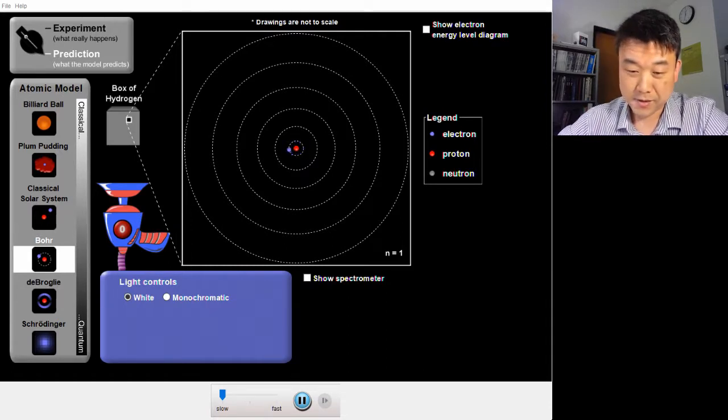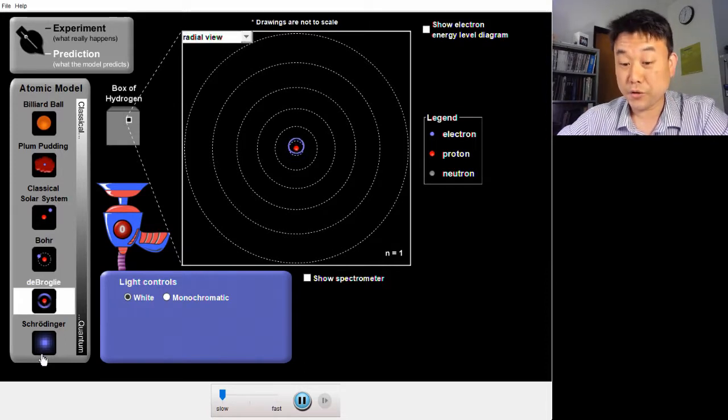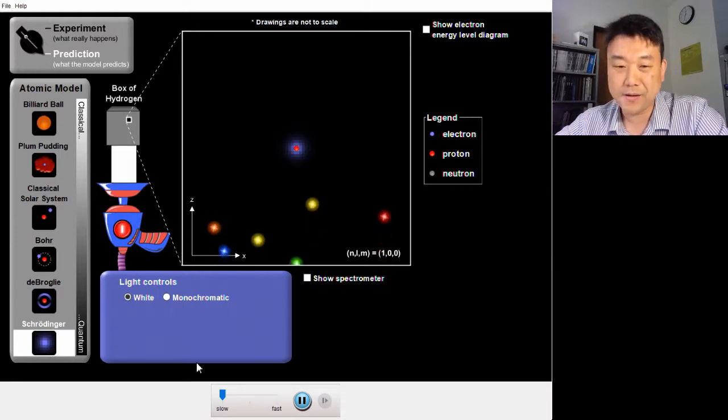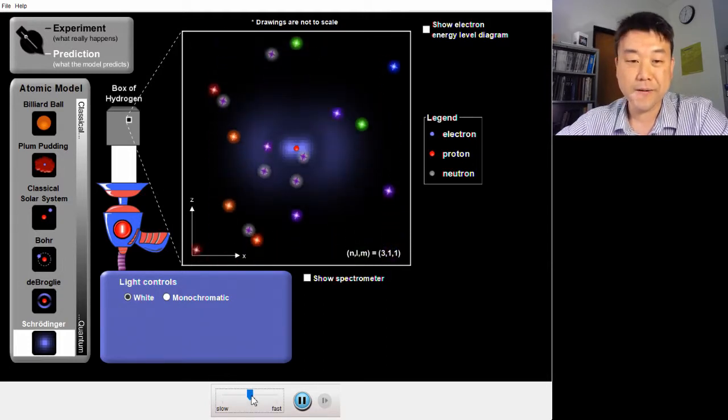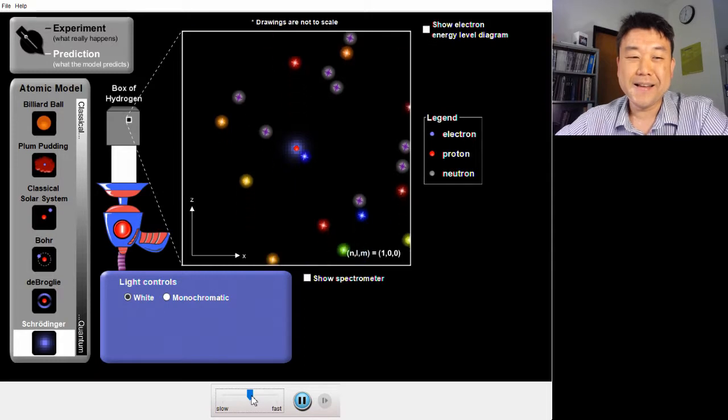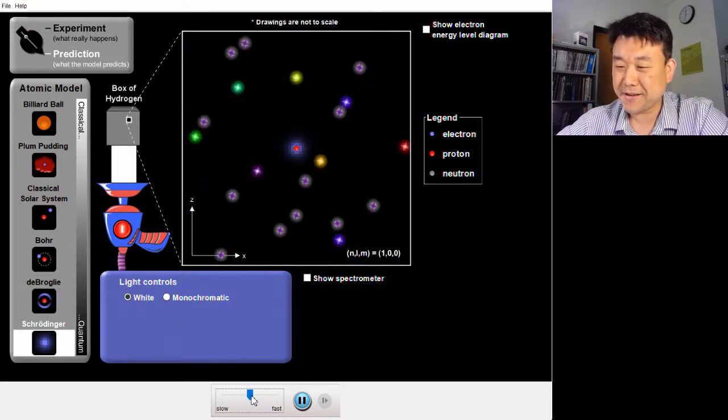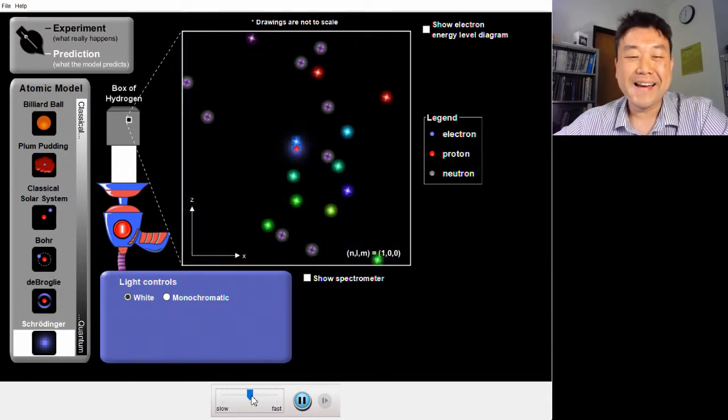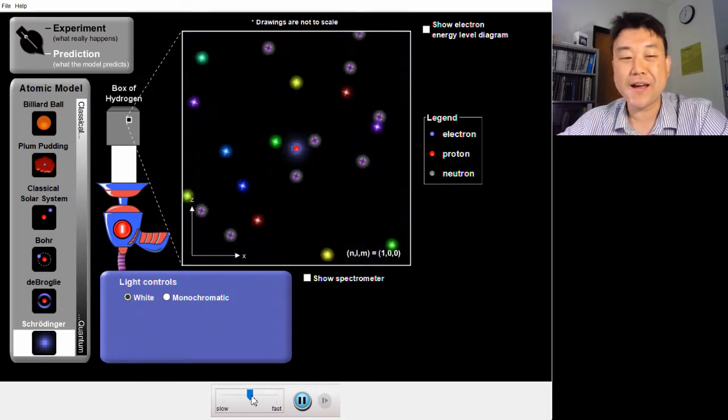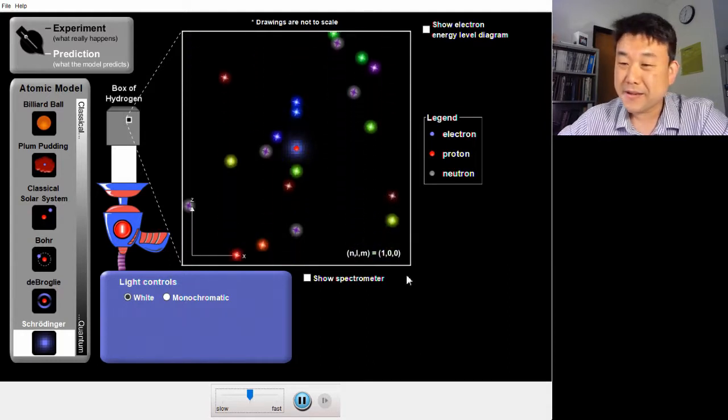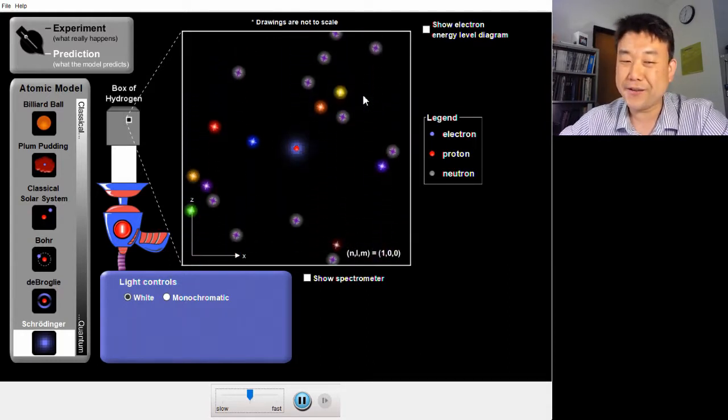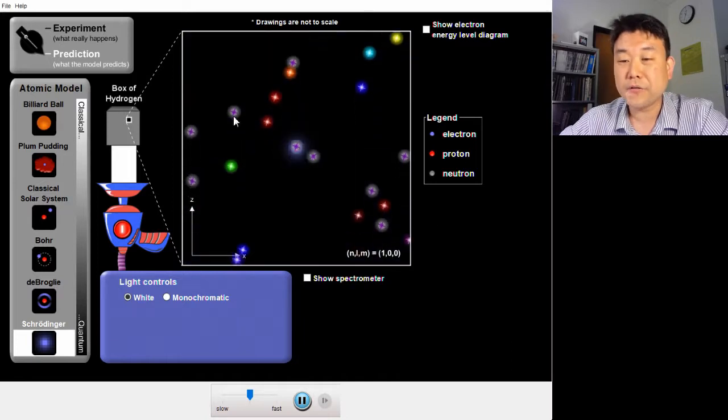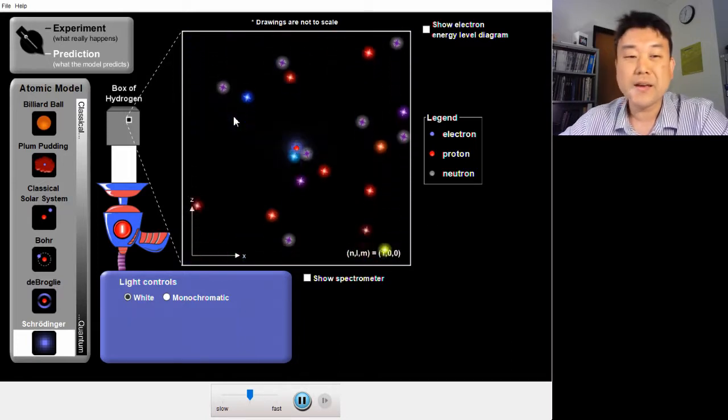You see two more models here. De Broglie model and Schrodinger model. The Schrodinger atomic model is what we now believe to be the completely correct model of hydrogen atom down to the last detail. But you see that we lost something here in the pursuit of correctness. Let's call it clarity. Except for those of you who took chemistry with electron cloud orbitals and all that stuff, this picture probably doesn't make a lot of intuitive sense. This is a trade-off we often need to consider. The trade-off between ease of understanding and accuracy.